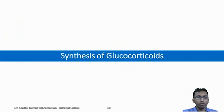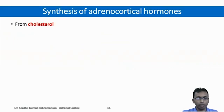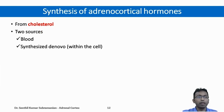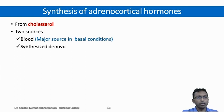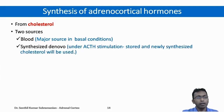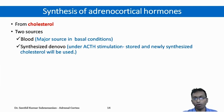Now let us move into the synthesis of glucocorticoids. All glucocorticoids or adrenocortical hormones are synthesized from cholesterol. The cholesterol sources are mainly from the blood, or it can be synthesized within the cell de novo. The blood forms the major source under basal conditions for synthesis of adrenocortical hormones. When under the stimulation of ACTH, stored cholesterol and newly synthesized cholesterol will be used.